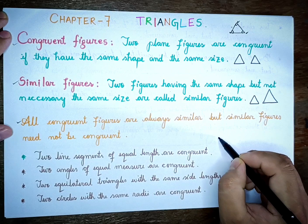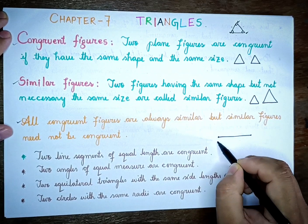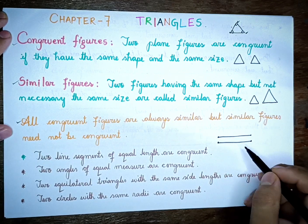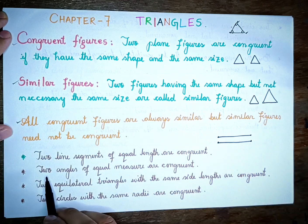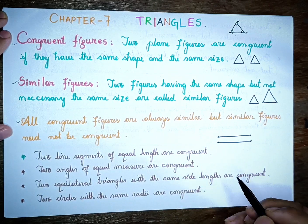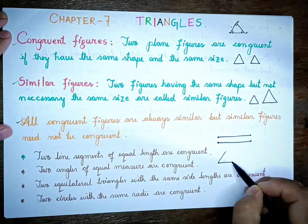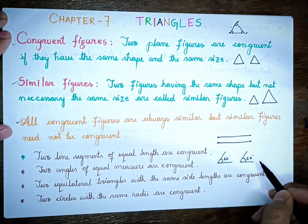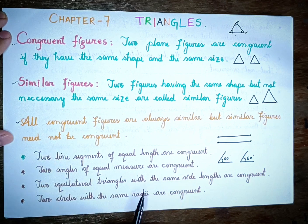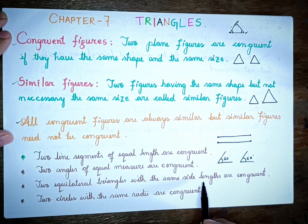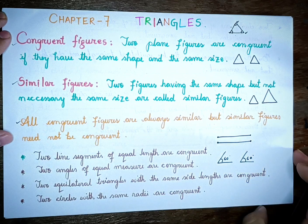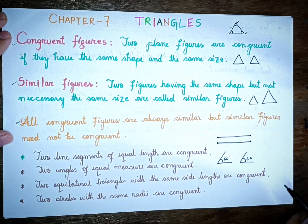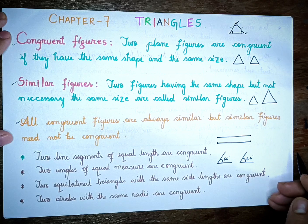Two line segments of equal length are congruent. Two angles of equal measure are congruent. For example, 60 degrees and 60 degrees — angles of the same measure are congruent. Two equilateral triangles with the same side length are congruent.